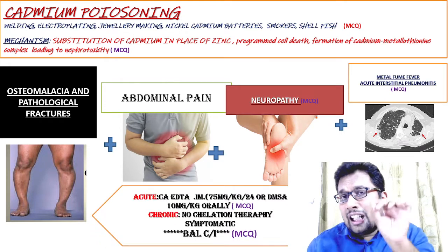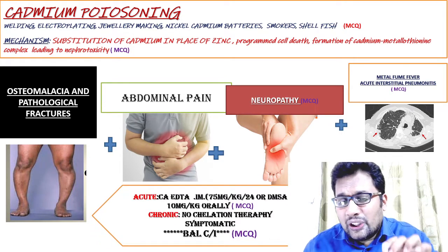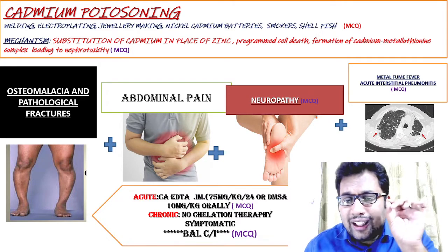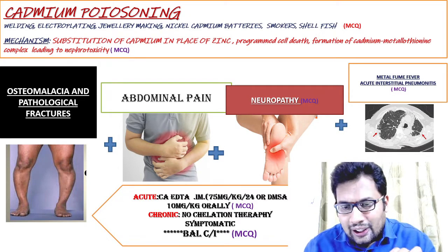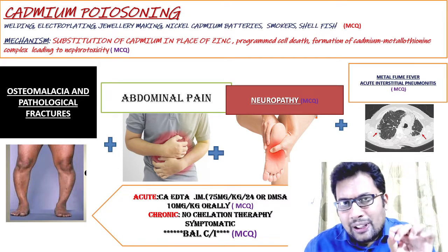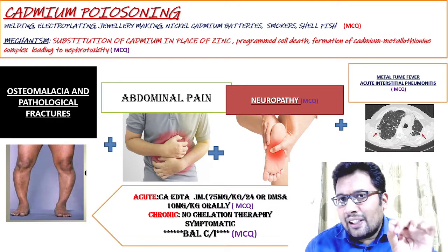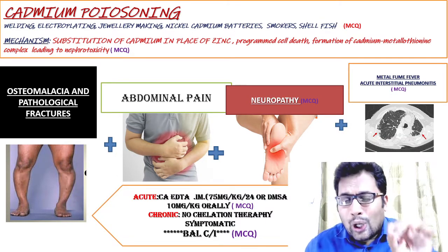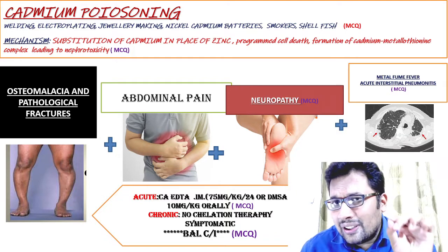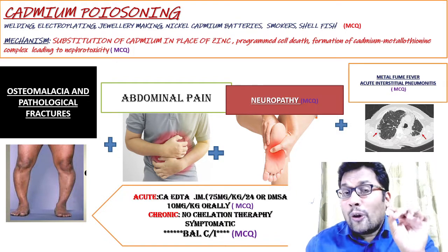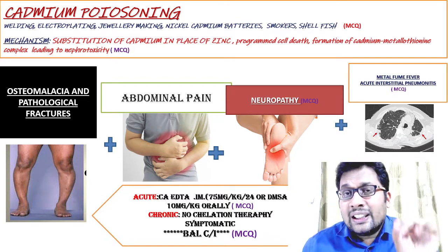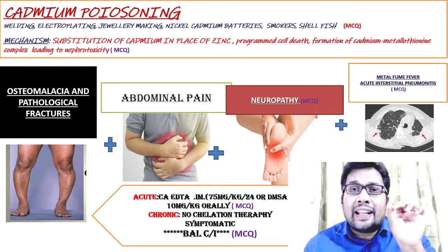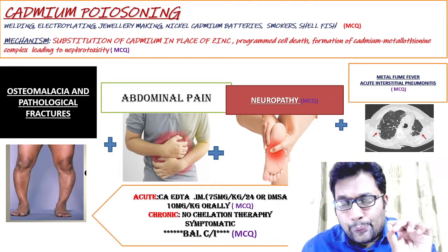For treatment in acute poisoning, you can use calcium EDTA or DMSA orally. Calcium EDTA is given intramuscularly at 75 mg per kg body weight per 24 hours. In chronic poisoning, no chelation therapy is helpful. BAL is contraindicated in case of cadmium poisoning. Thank you.